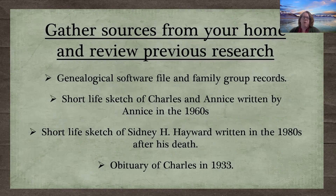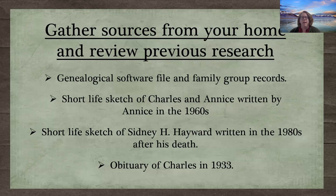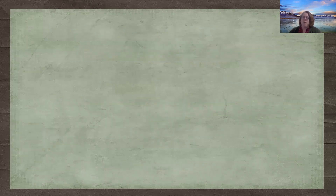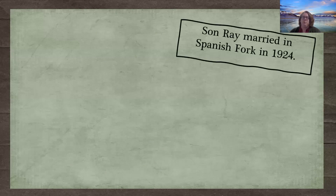Next, gather sources from your home and review your previous research. You may have things filed in genealogical software like RootsMagic or paper family group records. I found a short life sketch of Charles and Annis written by Annis in the 1960s, a short life sketch about my grandfather written by my grandmother in the 1980s, and a copy of Charles' 1933 obituary published in an American Fork newspaper. My RootsMagic file told me that Ray married in 1924 in Spanish Fork, which means the family had some connection there.